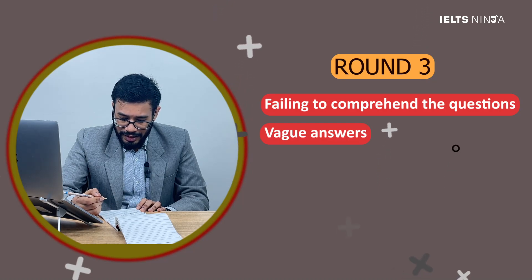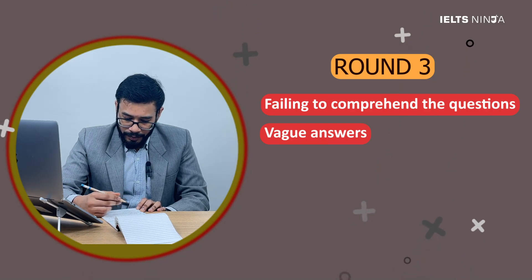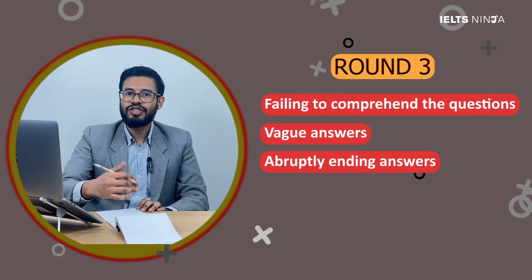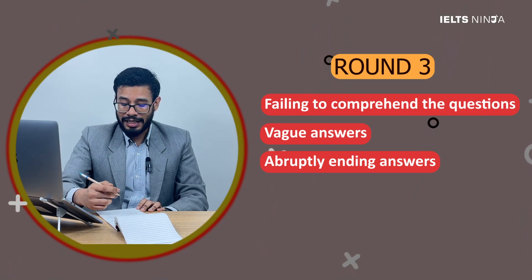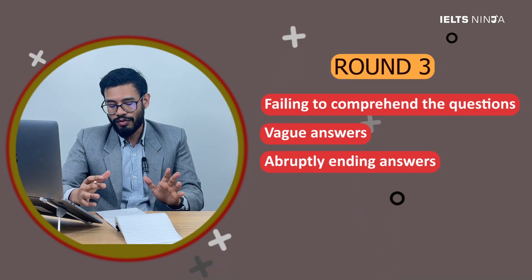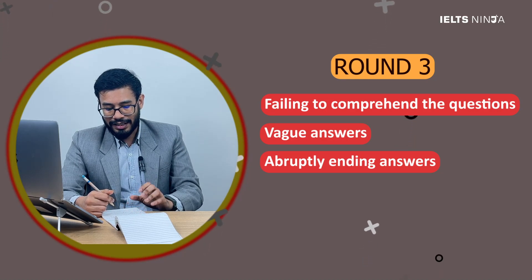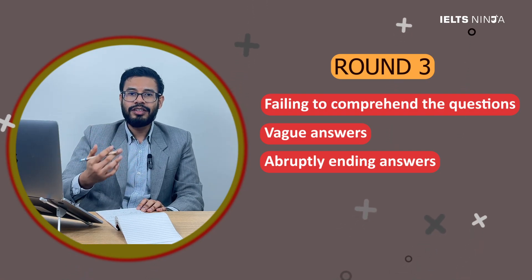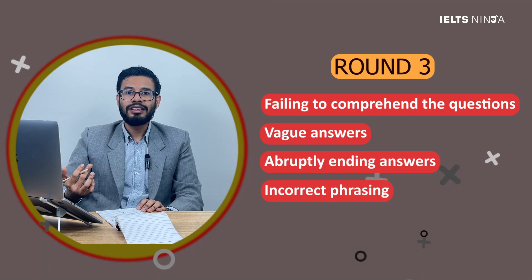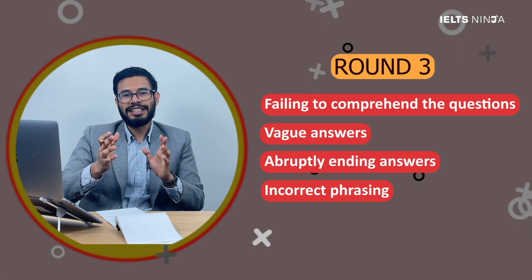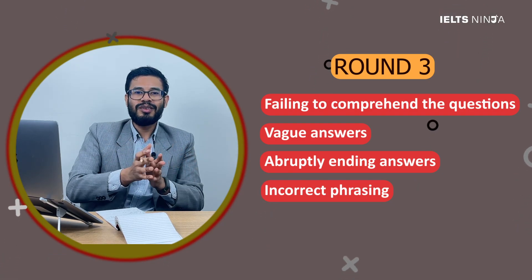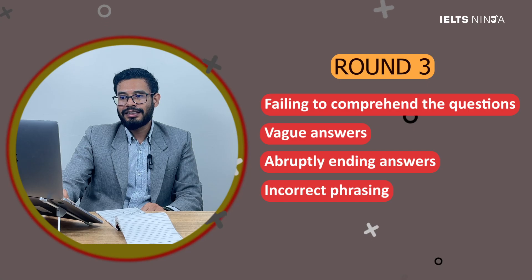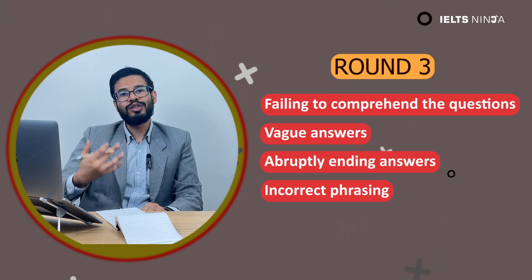When talking about who is in the news, Akshay kept repeating 'political people' — you would rather say 'politicians.' This shows a definite deficiency in vocabulary to express his thoughts and ideas, which is going to bring down his score. Now, if I were to grade Akshay on the four parameters — fluency and coherence, lexical resource, grammatical range and accuracy, and pronunciation — let me go through each.